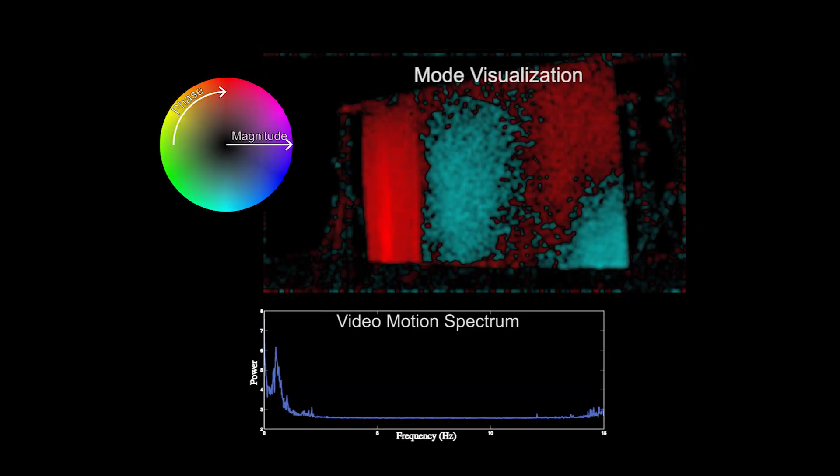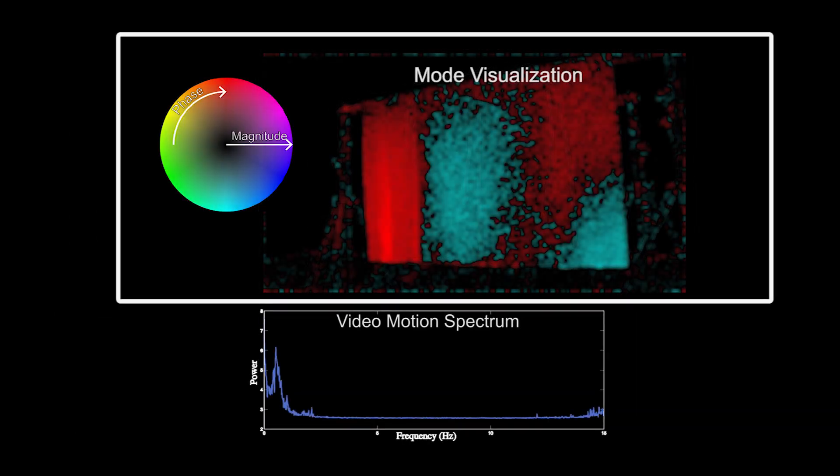Here we can examine the temporal spectra of these local motion signals. If we visualize the phases of these spectra at a particular frequency, we see the shapes of potential vibration modes.